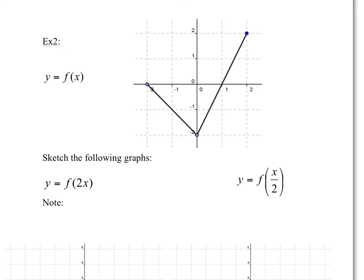Alright, page 2. Again, we're going to take our original function y equals f(x) as our parent graph and we're going to make transformations to it. Notice that the number is now inside the bracket. It's a little bit opposite of what was happening when it was outside the bracket. In this case, with this 2, that's 2 times x. You would think you multiply all the x-values by 2, but it's actually the opposite. Basically, this is going to divide the x-values by 2.